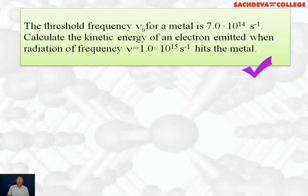Next question, the threshold frequency ν₀ for a metal is 7×10¹⁴ s⁻¹. Calculate the kinetic energy of an electron emitted when radiations of frequency 1×10¹⁵ s⁻¹ hits the metal.